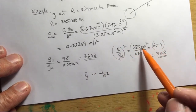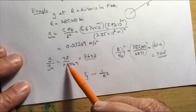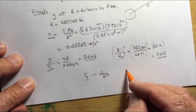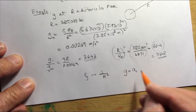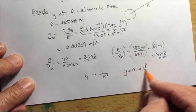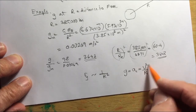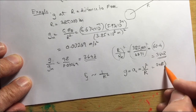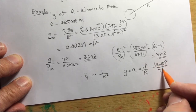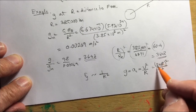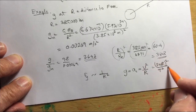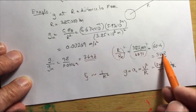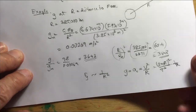Newton obtained the acceleration at the Moon's distance from the centripetal acceleration: a = v²/r, where v = 2πr/T, the orbital velocity. From the orbital period he calculated this acceleration, and found it followed an inverse-square relationship — that is how he arrived at the inverse-square law of gravitation.